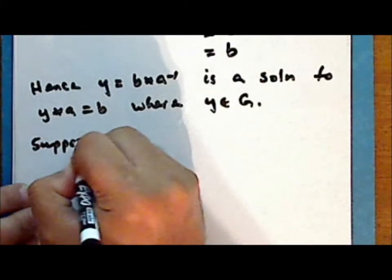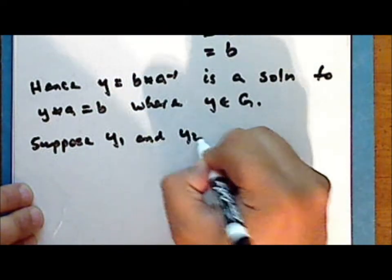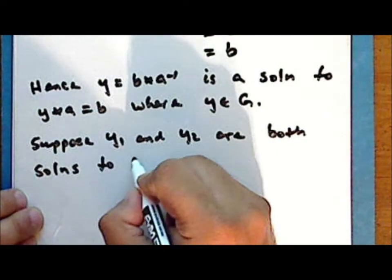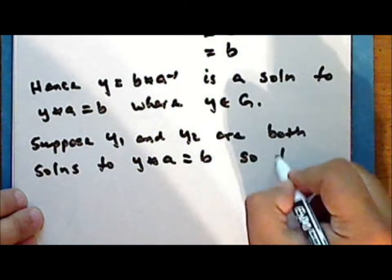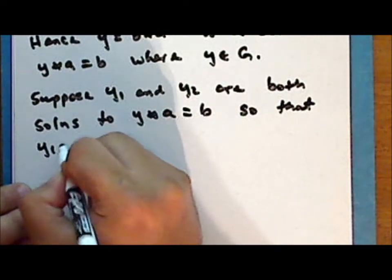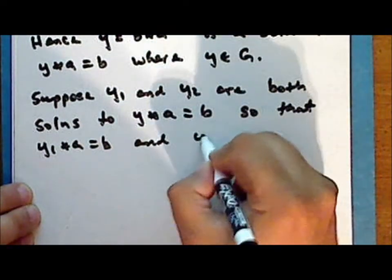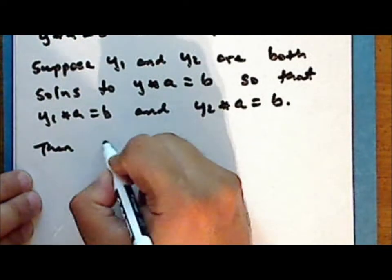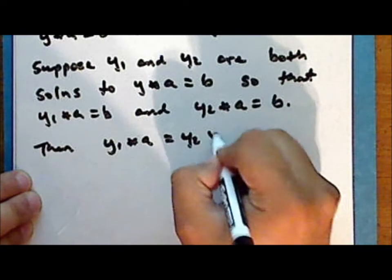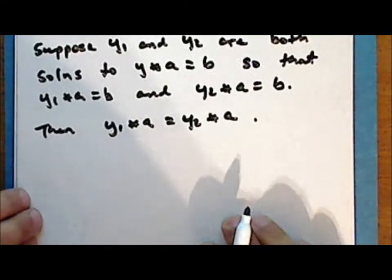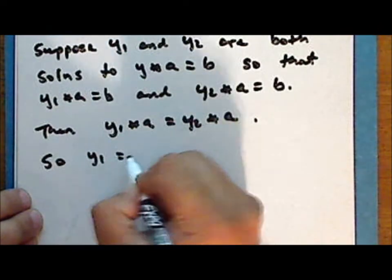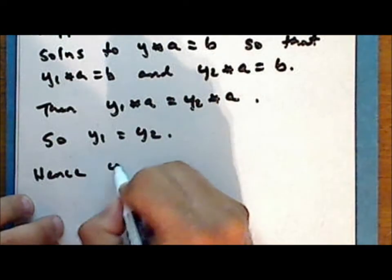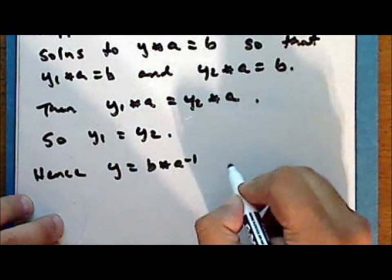Now suppose that Y₁ and Y₂ are both solutions to the equation Y star A equals B, so that Y₁ star A equals B and Y₂ star A equals B. Then Y₁ star A is equal to Y₂ star A, and since the right cancellation law holds, we have that Y₁ is equal to Y₂ — they are the same element. Hence the solution Y equals B star A-inverse is unique.